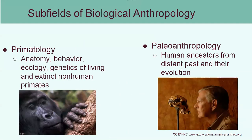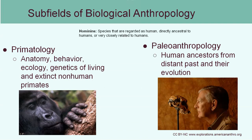Primatology has to do with studying both living and extinct non-human primates. In this image we see a gorilla. We also have other very closely related primate species such as chimpanzees — in fact, chimpanzees and humans are very, very closely related in terms of their DNA. In paleoanthropology, we're going to study human ancestors. Human ancestors fall into a category called hominins — species that are regarded as human and are directly ancestral to humans. Right now only Homo sapiens exists, but there are other species that existed in the past which have gone extinct and we can find their fossil record, such as Homo habilis and Homo erectus.